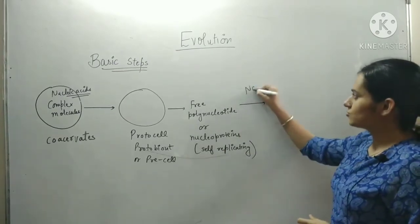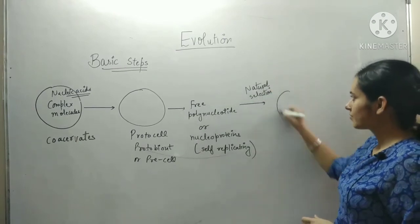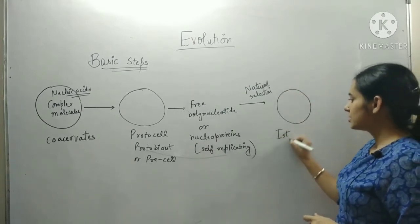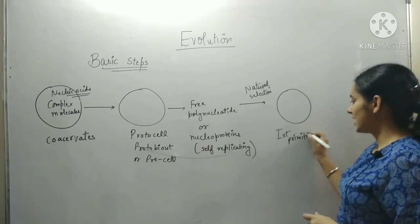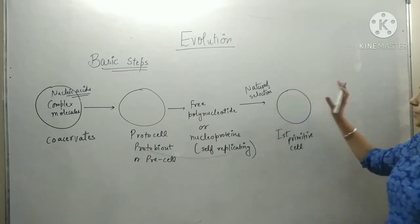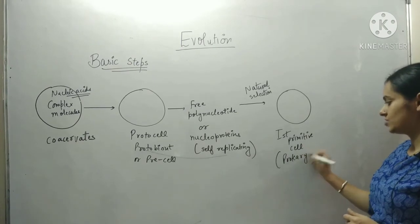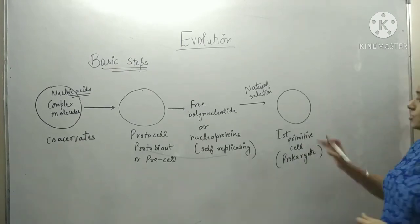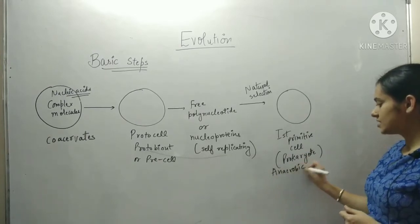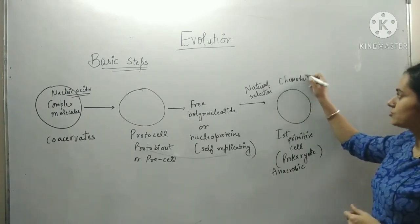After natural selection, we have the first cell in nature. The first primitive cell is actually made from protocells. We can consider this first primitive cell as an organism, which we call a prokaryote. The prokaryote was anaerobic — meaning it did not use oxygen, existing in the absence of oxygen — and second, it was chemoheterotrophic.